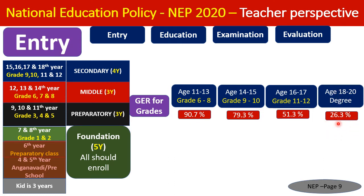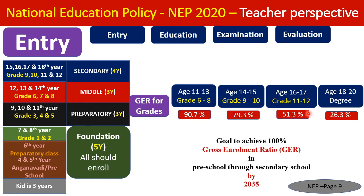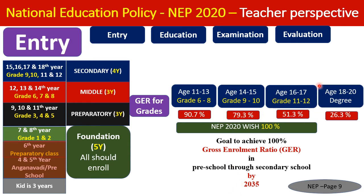If 74% of the young generation are not pursuing education, how can the country prosper when only 26% become graduates? Unless they are brought into the education system, development is difficult. NEP 2020 targets 100% enrollment through Grade 12 by the year 2035 and at least 50% Gross Enrollment Ratio for degree courses.